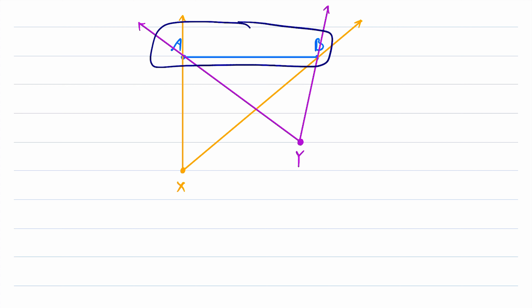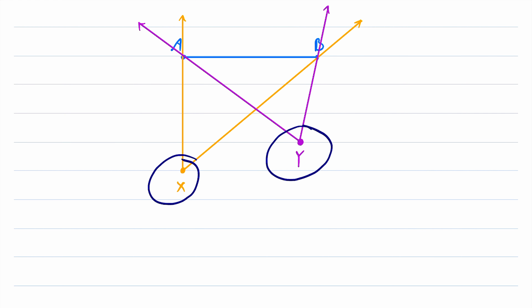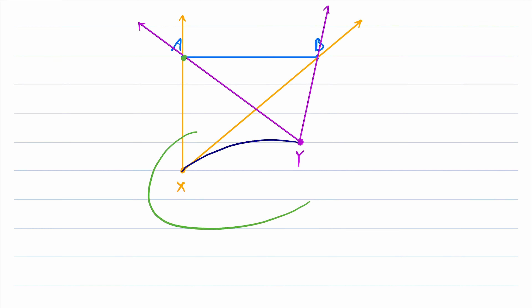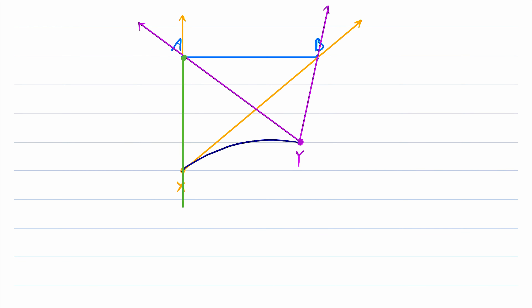Angles can be subtended by line segments, but they can also be subtended by arcs or curves. In those cases, just like in this one, an angle subtended by some object is an angle whose rays pass through the endpoints of that object. Now let's look at one more example on this diagram. We could draw an arc from the point X to the point Y. Then we could consider angles subtended by this arc — for example, the angle subtended by the arc XY from the vertex A. Its vertex is at A, and its rays pass through the endpoints of the arc XY. So that's an example of an angle subtended by an arc.